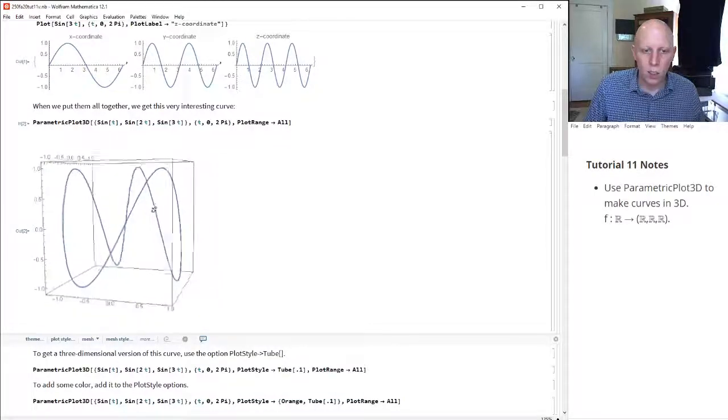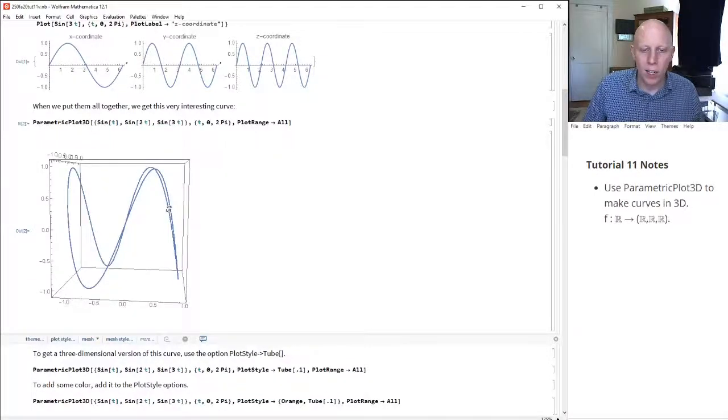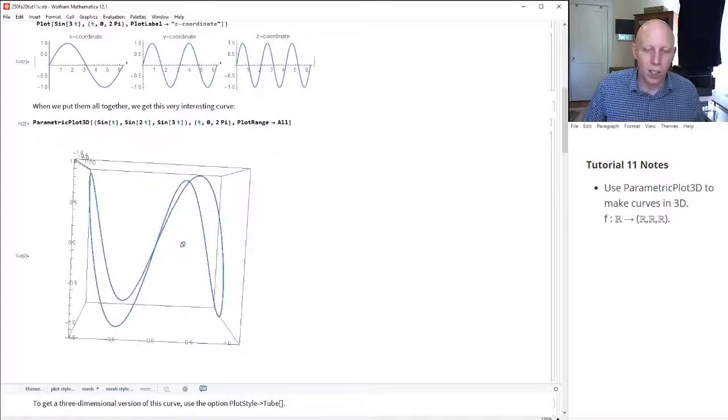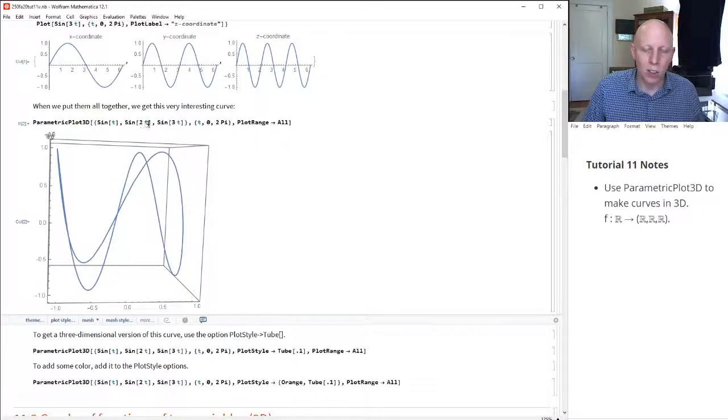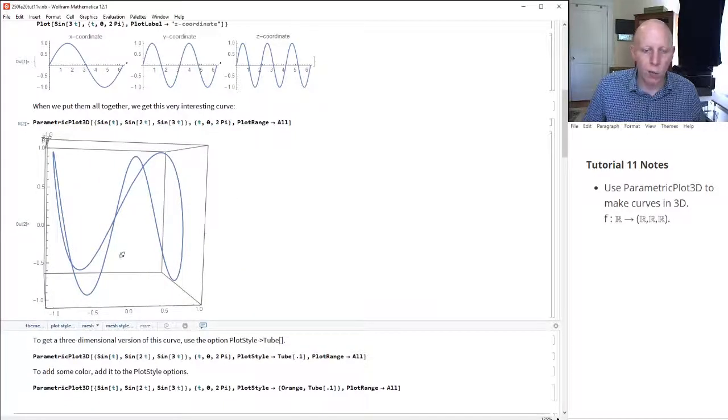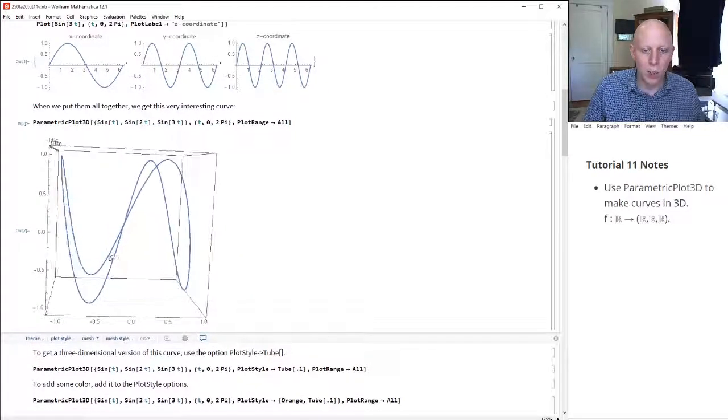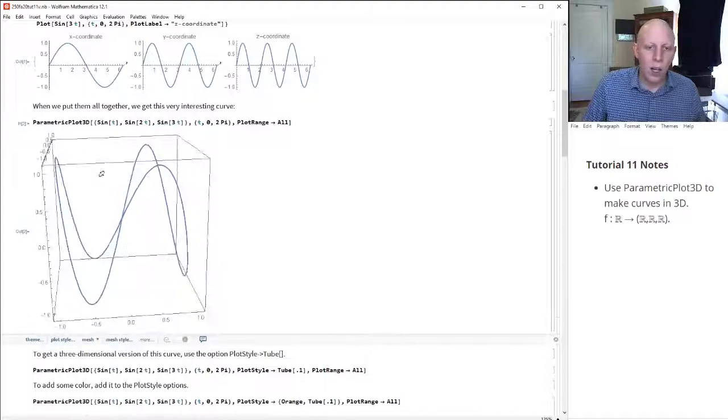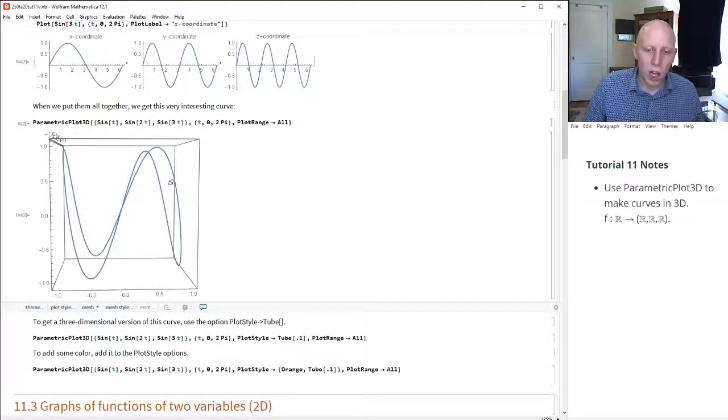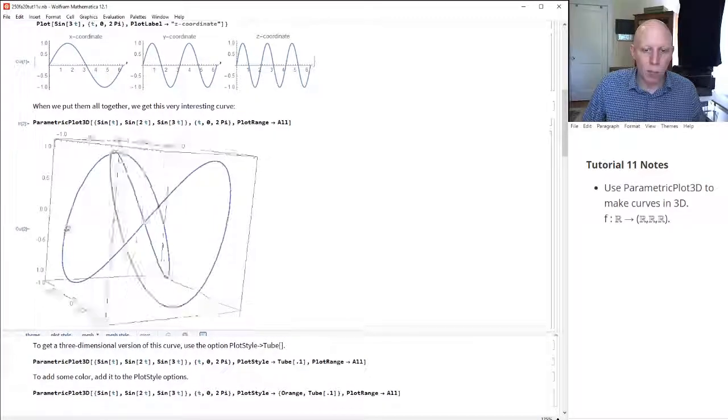That's pretty fascinating, right? We would expect this curve to be bounded by negative 1 to 1 in each of the coordinates because the range of the sine function is 0 to 1. And it bounces back and forth in each of the different directions. So this again is a one-dimensional object located in 3-space, but if we wanted to maybe print one of these, 3D print one of these, we need to give it some thickness.